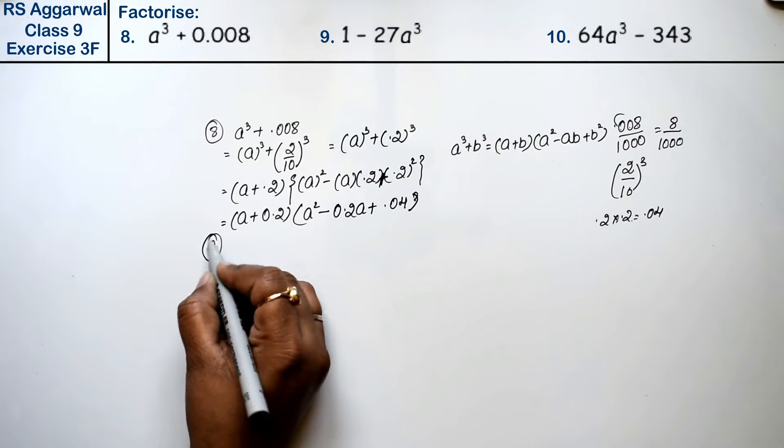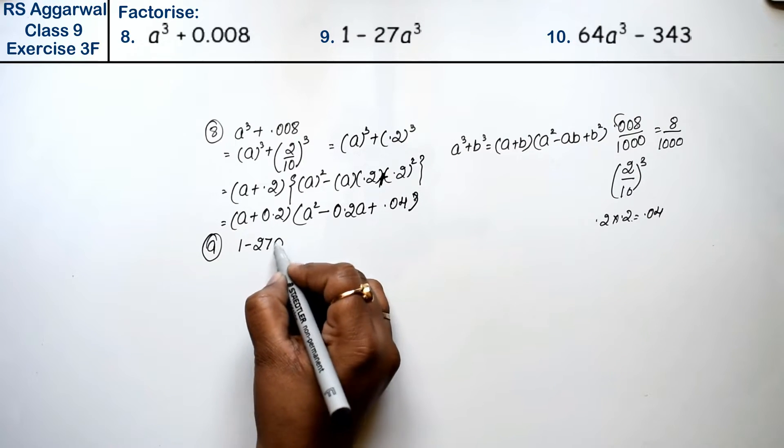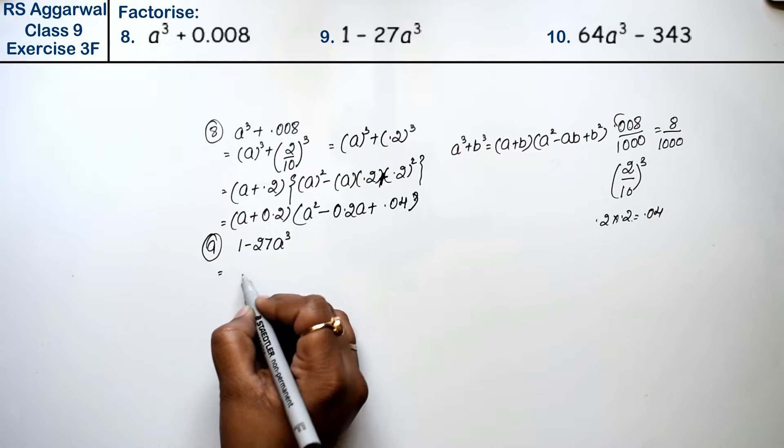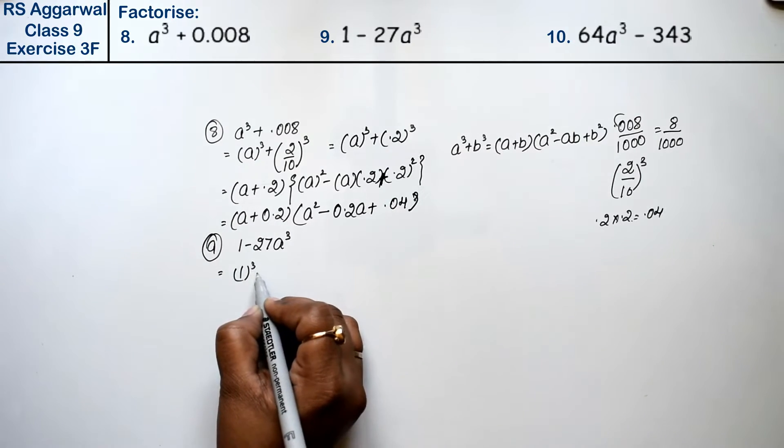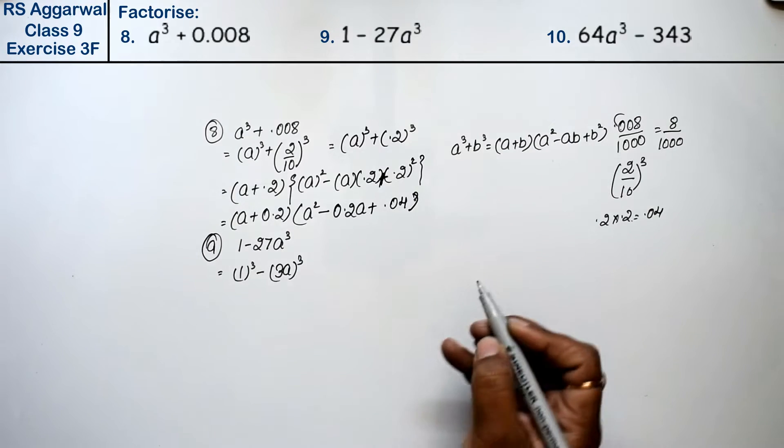Let's do question number 9. Question number 9 is 1 minus 27a³. This is 1³ minus (3a)³.